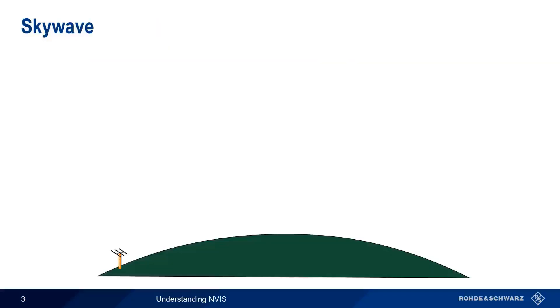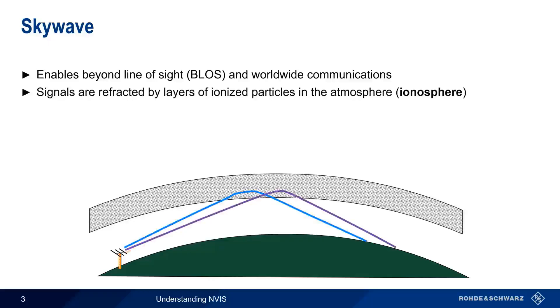We'll start our discussion of NVIS with a short review of traditional sky wave propagation. Sky wave is one of the most important HF communications modes because it enables beyond line of sight and even worldwide communications. In sky wave, layers of ionized particles in the upper atmosphere refract HF signals back towards Earth, allowing communications over many thousands of kilometers. The distances that can be covered by different frequencies are largely a function of the state of these layers of ionized particles, collectively referred to as the ionosphere.